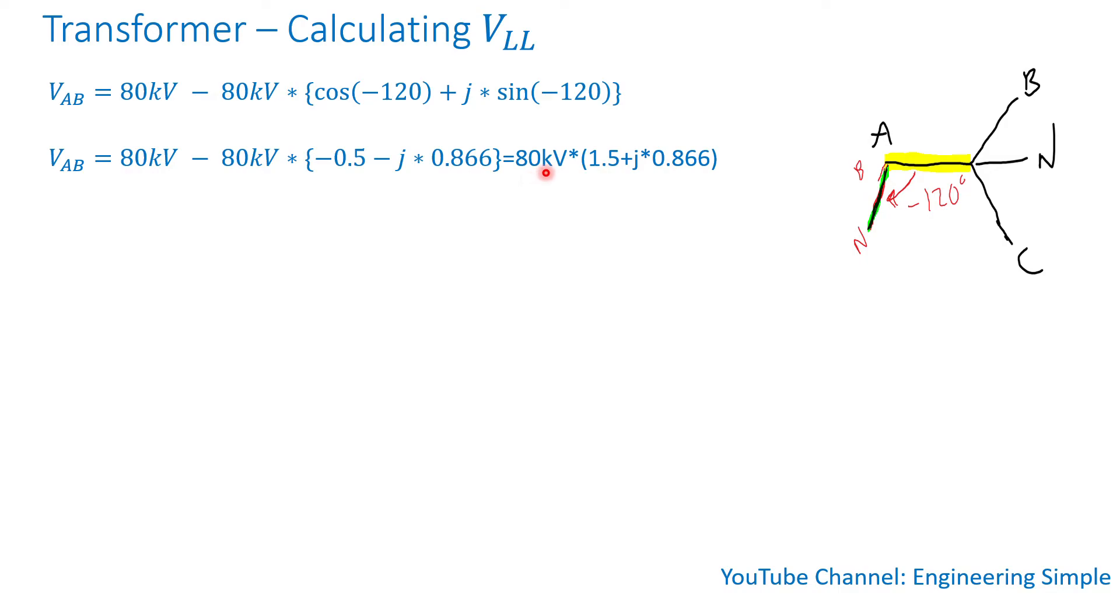Which equals 80 kV times 1.5 plus j times 0.866, factoring out 80 kV. If I write this in polar format, it's 80 kV times square root of 1.5 squared plus 0.866 squared, with an angle of inverse tan of 0.866 divided by 1.5, which equals 80 kV times 1.732 at 30 degrees.